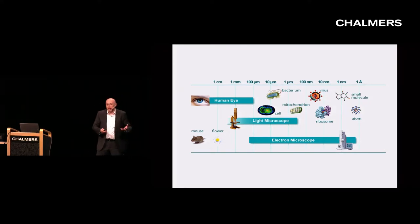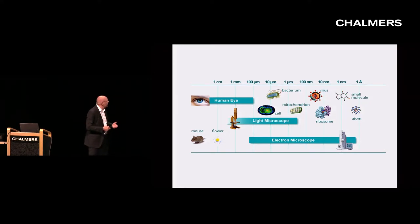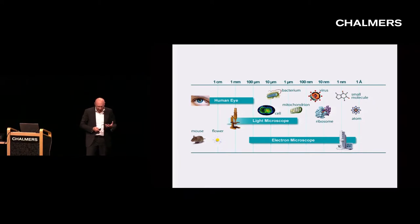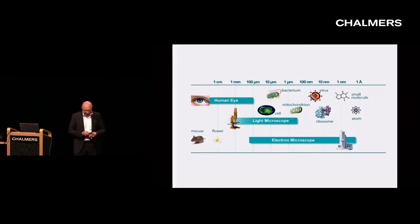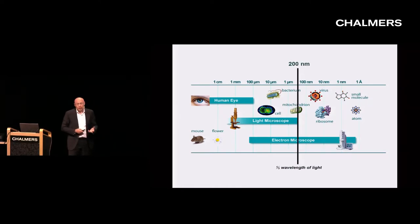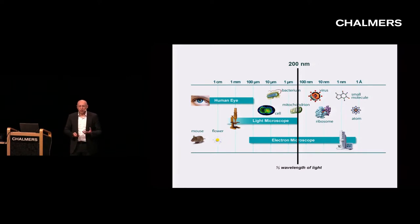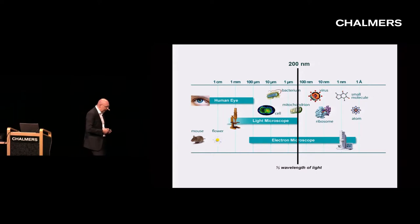With light microscopy, we were able to see for the first time that every living being consists of cells as basic units of structure and function, and organelles were discovered with a light microscope. However, we've been told in school that resolution of a light microscope is fundamentally limited by diffraction to about half the wavelength of light, and this is the reason why electron microscopy was invented.